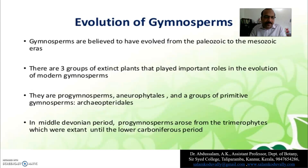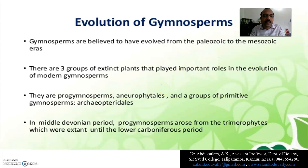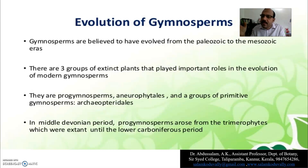They are: pro-gymnosperms, then another group called aneurophytales, and groups of primitive gymnosperms, and then archaeopteridales. So this is an important aspect of gymnosperm evolution.